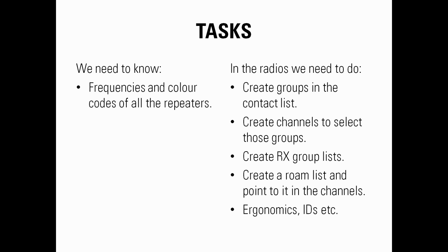Then, once we have that information in the radio, we will need to create groups — talk groups and the contact list. We'll create channels to select those groups, so the user of the radio can select the talk group by changing the channel select switch. Then create an RX group list, which points back to the talk groups and the contact list. Then we'll need to create a roam list and point to it in the channel.